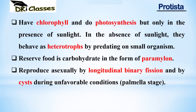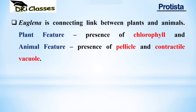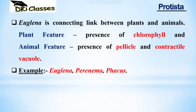Euglenoids can reproduce asexually by longitudinal binary fission and by cyst formation during unfavorable conditions — the cyst stage is called the palmella stage. Euglena is the connecting link between plants and animals: in the presence of sunlight it shows autotrophic nutrition (plant feature — chlorophyll), and in the absence of sunlight it shows heterotrophic nutrition. Animal features include a large contractile vacuole and the presence of pellicle instead of a true cell wall. Examples are Euglena, Peranema, and Phacus.